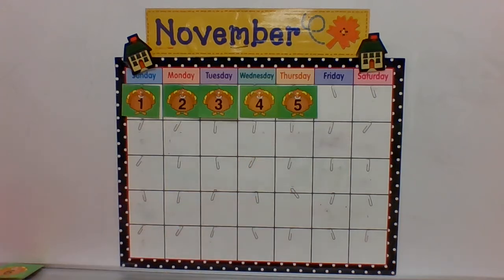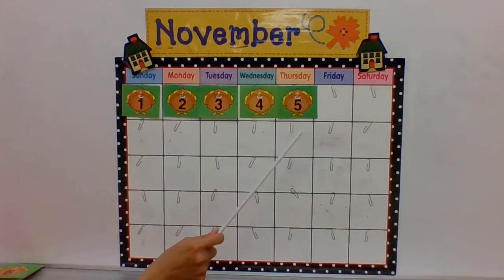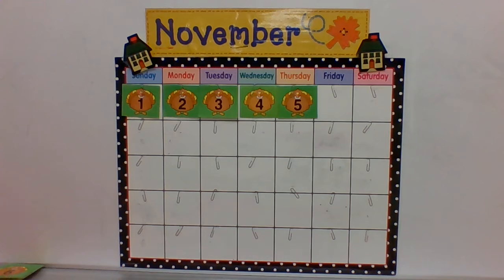Tomorrow is Saturday, a home day, and after Saturday is Sunday — another home day. So today is Friday, November — what? What comes after the number five? What number do you think will be here?